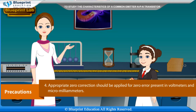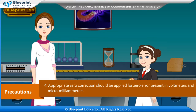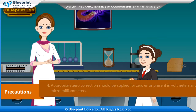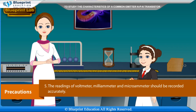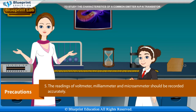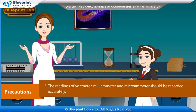Appropriate zero correction should be applied for zero error present in voltmeters, milli-ammeter and micro-ammeter. The readings of voltmeter, milli-ammeter, and micro-ammeter should be recorded accurately.